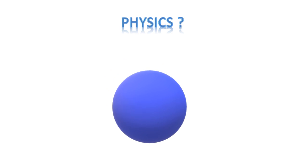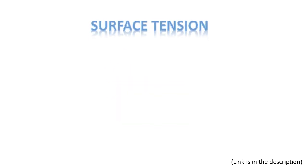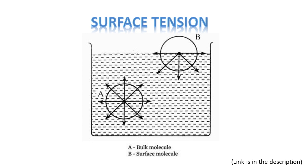The reason behind the water drop being spherical can be explained by simple physics. Surface tension is the property of the liquid by virtue of which its free surface acts as a stretched membrane. To know more about the surface tension of water, follow the link given in description.